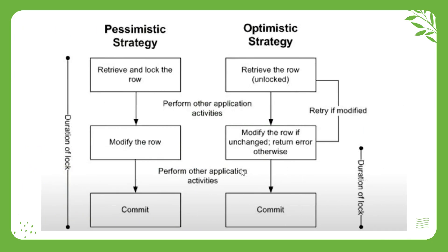As we can see, the pessimistic strategy retrieves and locks the row, modifies the row, and then commits it. Whereas the optimistic strategy retrieves the row unlocked, modifies the row if unchanged, returns an error otherwise, and then commits. We can compare the log duration in the diagram as well.